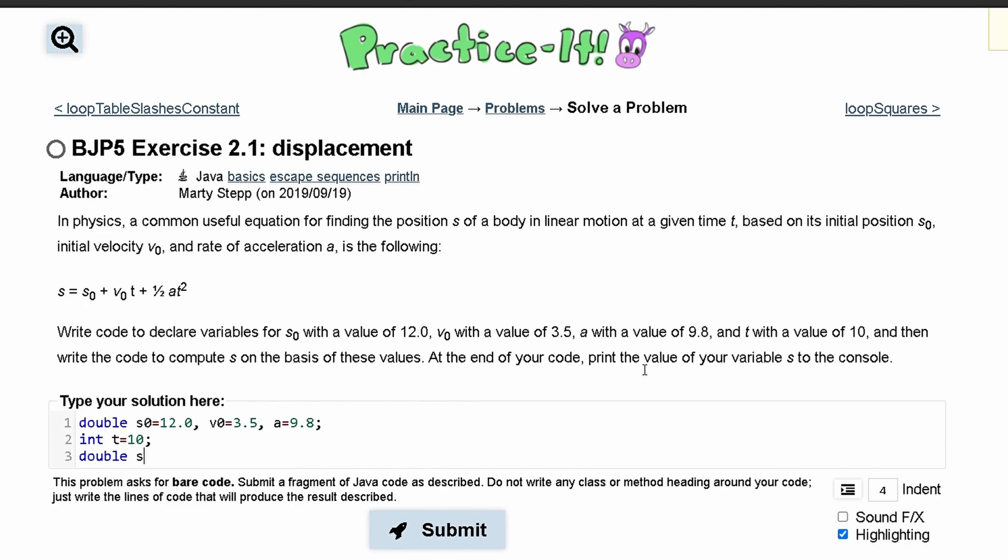We can store s as a double and set it equal to this equation up here. We have s0 plus v0 times t plus, and then we can have a right here, and we have t squared.